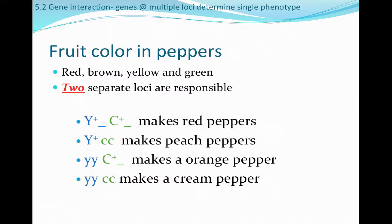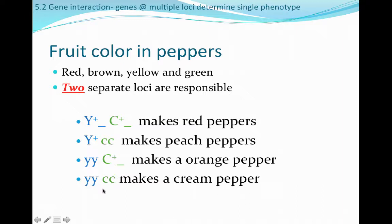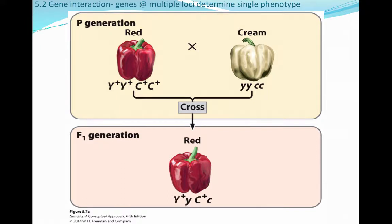If we have homozygous little y at the first locus and a C+ at the first allele of the second locus, it doesn't matter what's in the last position — that pepper is going to be orange. The peach or brown peppers are going to have a Y+ phenotype with a homozygous little c little c genotype at the second locus. Finally, our cream pepper is what we think of as homozygous recessive — little y little y on the first locus and little c little c on the second locus.